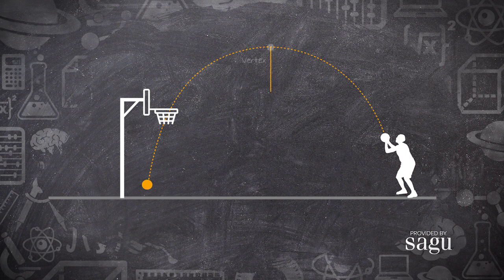In basketball, your eyes are looking for the vertex — the highest point the ball achieves in its flight — which should be about halfway between the shooter and the backboard.